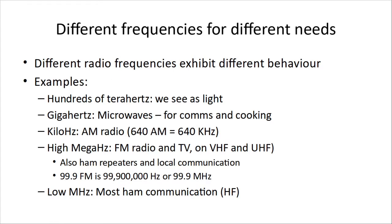We have different frequencies for different needs, and different radio frequencies exhibit different behavior. Think about satellite TV — it has to have an antenna outside, but your regular TV and radio work fine inside, same with your cell phone. The frequencies used by satellite TV do not go through walls. When we get up to terahertz — trillions of waves per second — those radio frequencies we see as light; we have radio receivers for them inside our eyeballs. Gigahertz is where microwaves are. Your microwave oven is about 2.4 gigahertz, and so are your RC devices and cordless phones — you can use them for communications and for cooking.